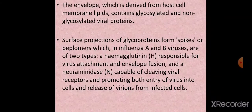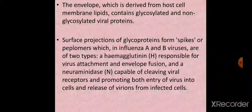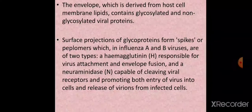The second spike is neuraminidase, an enzyme capable of cleaving viral receptors, promoting both entry of the virus into the cell and release of virions from infected cells. Neuraminidase is also known as a receptor-destroying enzyme. These two surface spikes are peculiar structural characteristic features of both paramyxoviridae and orthomyxoviridae families.